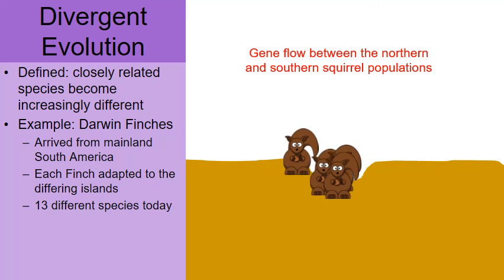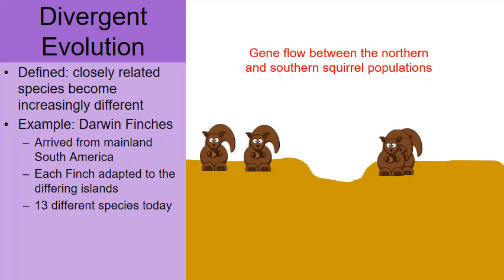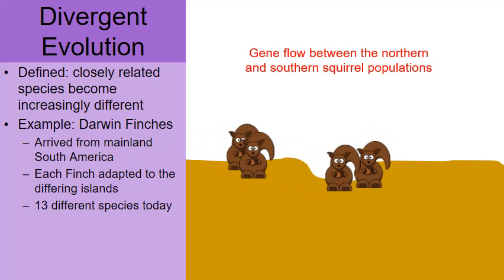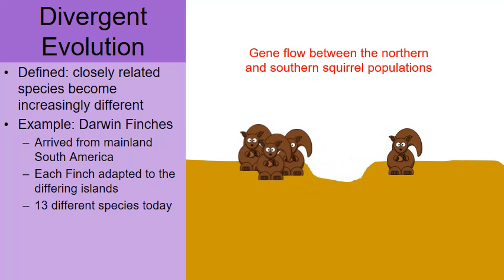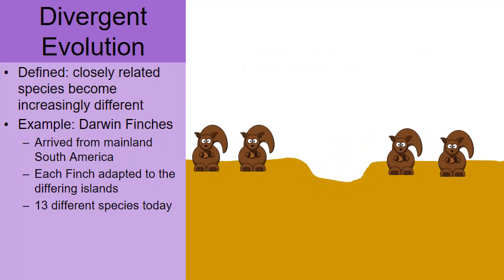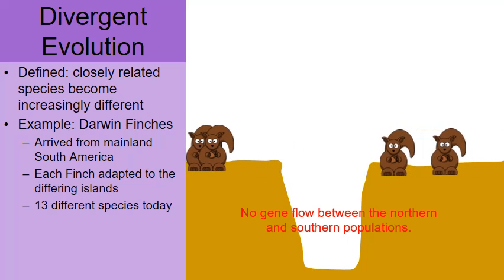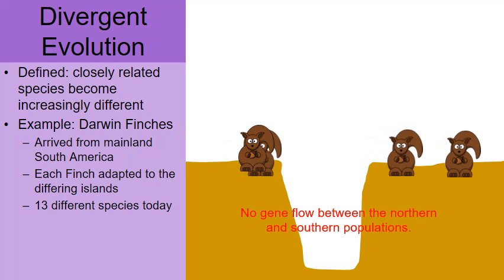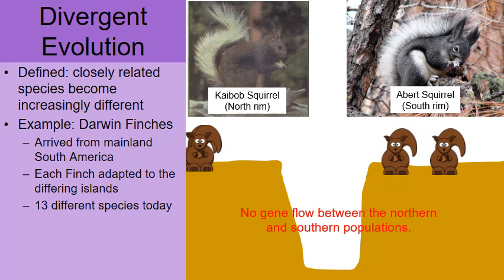Here we have some cartoon squirrels representing real squirrels in the Grand Canyon area. Going back in time, when the Grand Canyon wasn't so grand, there was gene flow between the northern squirrels on the left and the southern squirrels on the right. But as time passed, the forces of erosion and the Colorado River carved and made the Grand Canyon what it is today. Now there is absolutely no gene flow between the squirrels on the left, representing the northern side, and on the right, representing the southern side — resulting in two different species of squirrels.